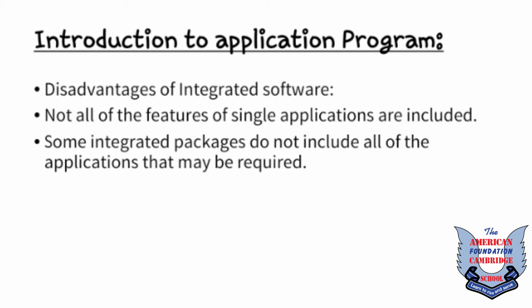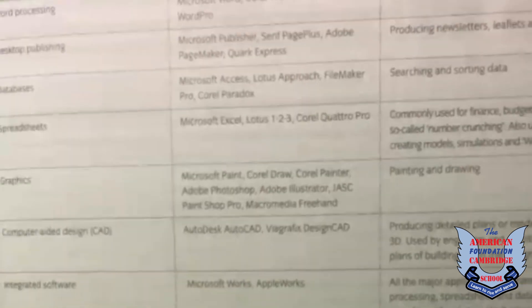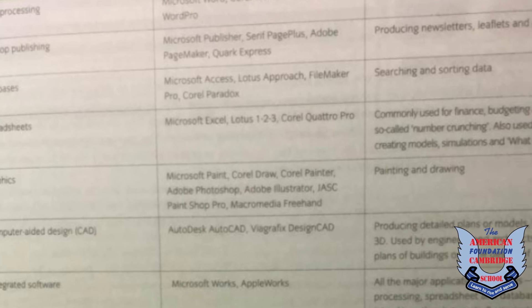Here are some types of software with their examples and purposes. The first is word processing — software such as Microsoft Word or Lotus Word Pro can be used for this. Its purpose is to type documents, reports, and CVs. The next is desktop publishing — software like Microsoft Publisher or Adobe PageMaker can be used for producing newsletters, leaflets, and posters.